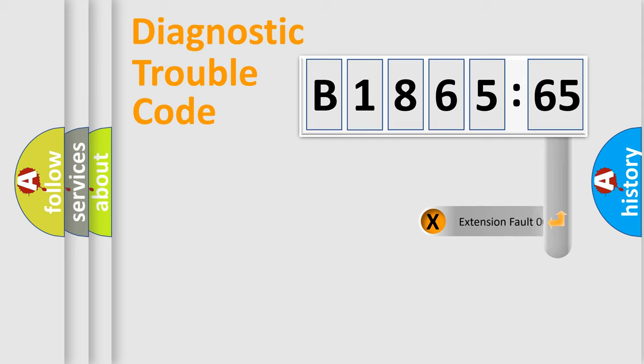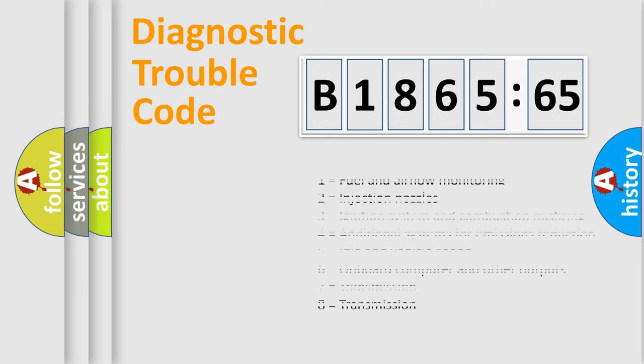Only the last two characters define the specific fault of the group. The add-on to the error code serves to specify the status in more detail.